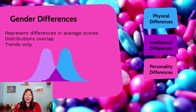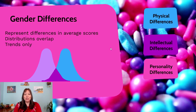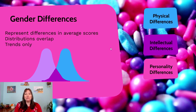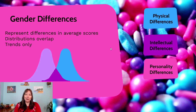Even when we say some boys score higher than girls on average, we're only looking at population trends — this doesn't explain individual differences. Looking at population trends only, we do find there are some gender differences in terms of physical, intellectual, and personality traits, and we're going to go through these three categories quite briefly.